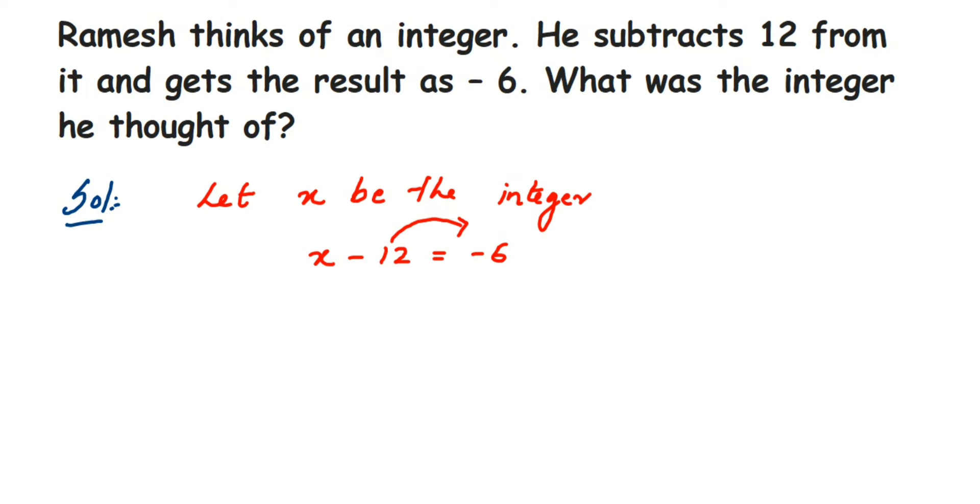Some number, from that number we're subtracting 12, and the answer we got is -6. Obviously, the number has to be smaller. Why smaller? Because the 6 we got has a negative sign, and 12 has a negative sign here.